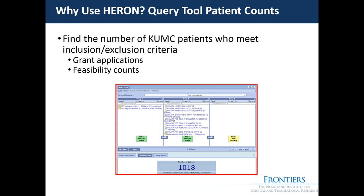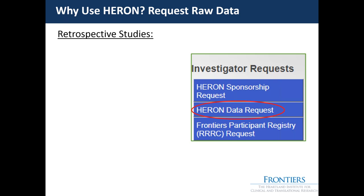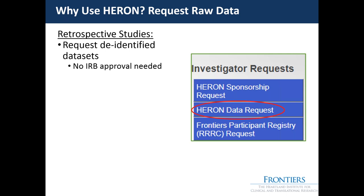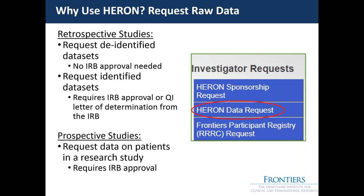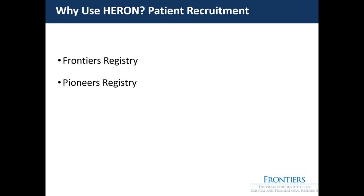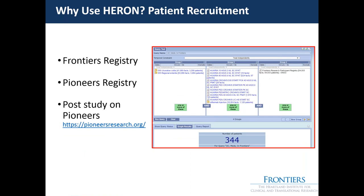Some reasons to use i2b2: you can get feasibility counts, which is great for grant applications and to decide if your study is feasible. You can also request raw data — at KUMC, researchers can request de-identified data sets without IRB approval, or identified data sets which require either IRB approval or a quality improvement letter of determination. For prospective studies, researchers can request data on patients already in a research study — for example, if they've recruited a thousand patients for a trial and want hemoglobin A1c on all of them. We also use it to help with patient recruitment through the Frontiers and Pioneers registries.